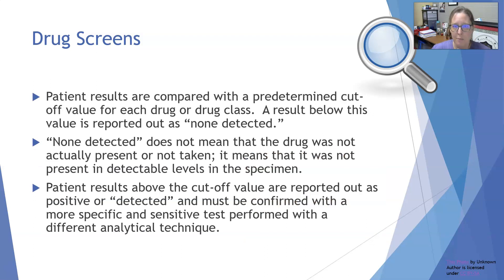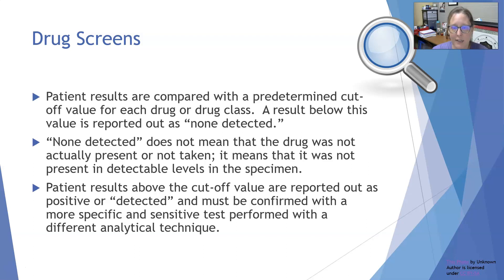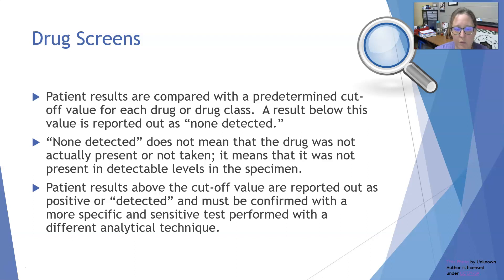Patient results are compared with a predetermined cutoff value for each drug or drug class. A result below the value is reported out as 'none detected' or 'negative' — it doesn't mean the drug wasn't taken, just that it was below detectable levels. Patient results above the cutoff value are reported out as positive or detected. Especially if there are legal ramifications, these need to be confirmed with a more specific and sensitive test using a different, more precise analytical technique.